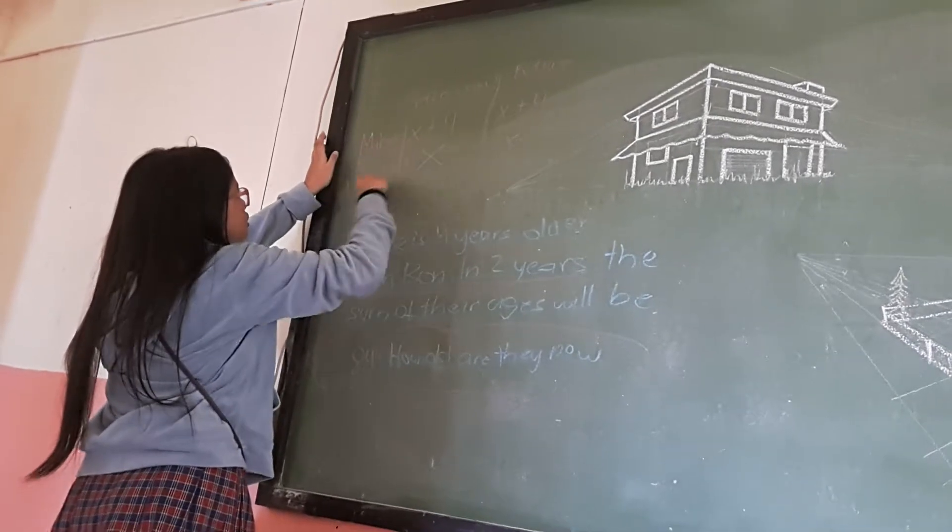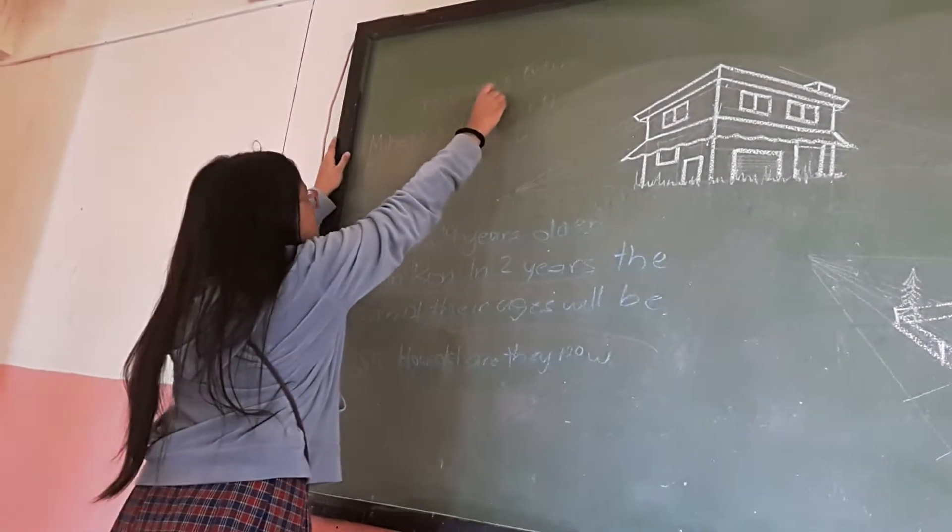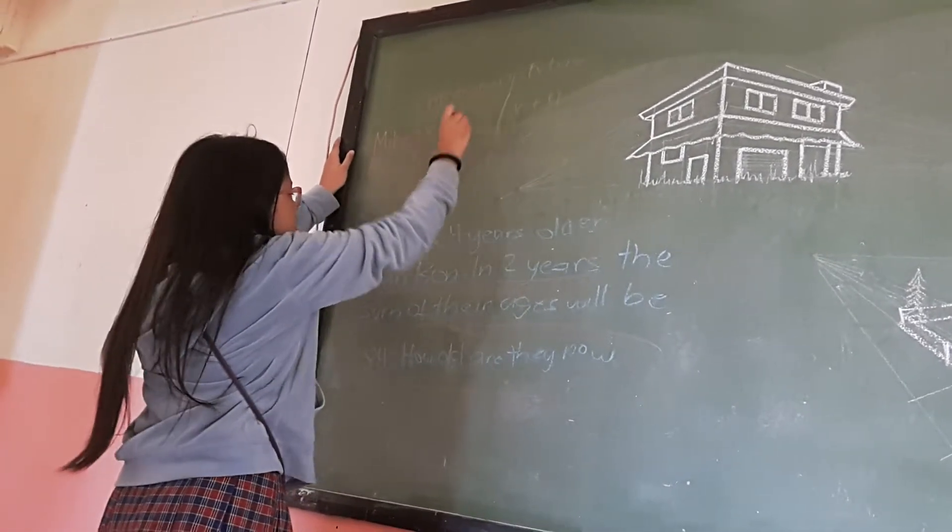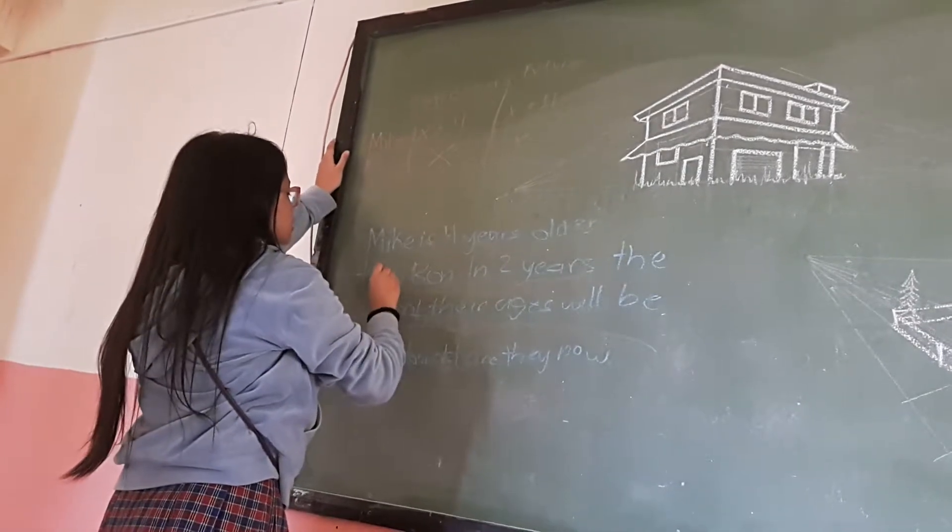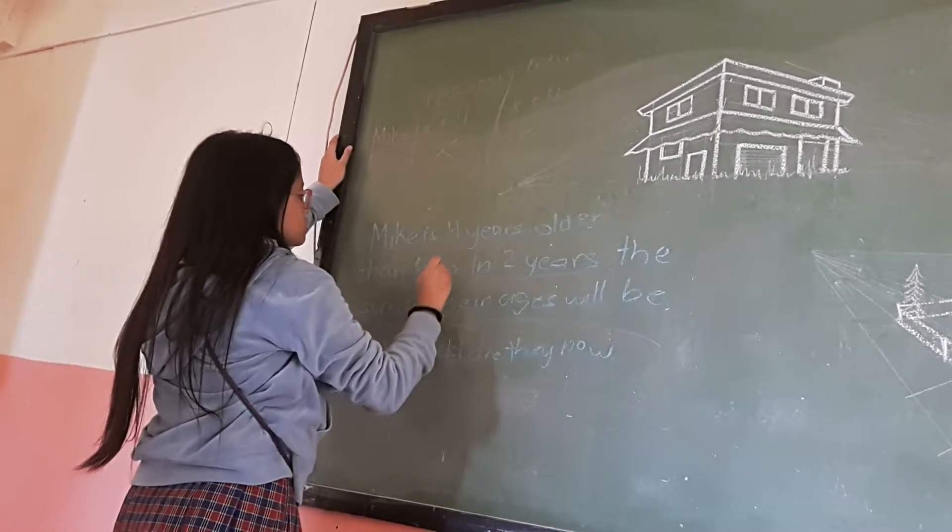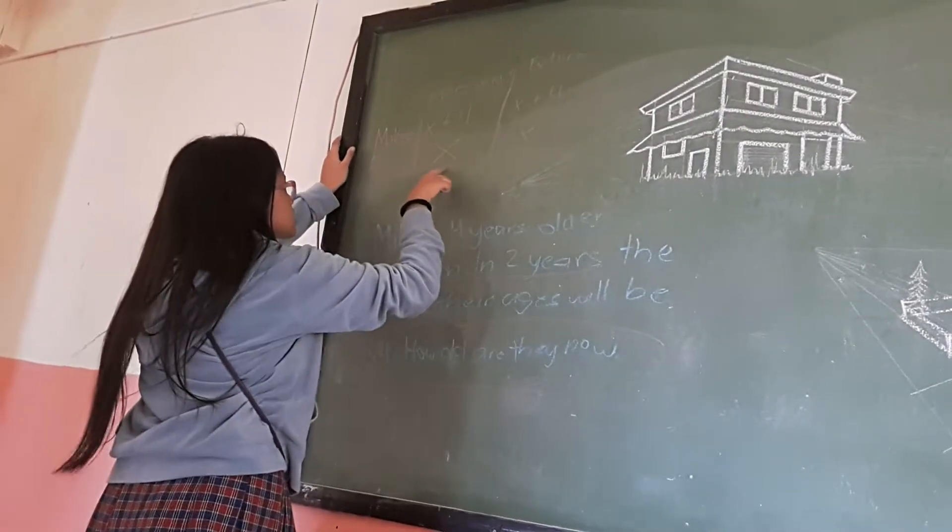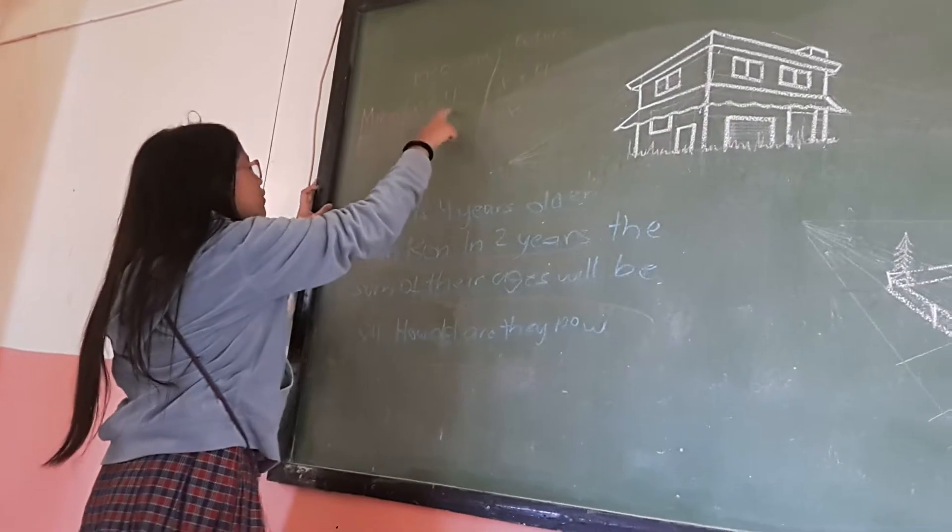These are the names of Mike and Ron. We will make columns for present and future. Since it says Ron's age is not given yet, it will be defined as X. And since Mike is four years older, then it will be X plus 4.